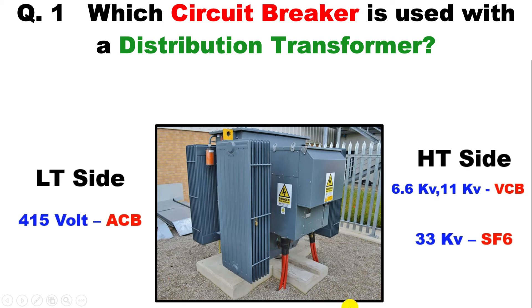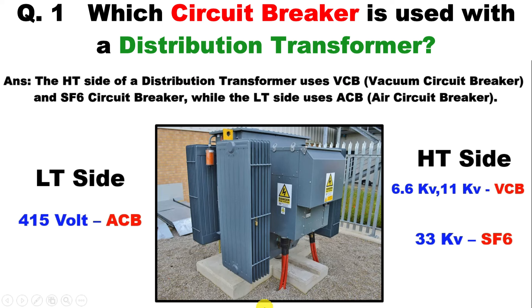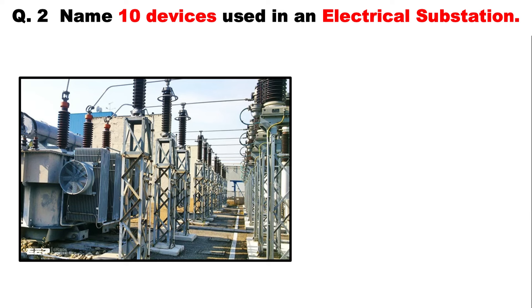So how do you give the answer? You should say: for the HT side of a distribution transformer, VCB or SF6 circuit breaker is used. For the LT side of the transformer, through which we distribute power supply, we use an ACB.